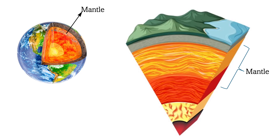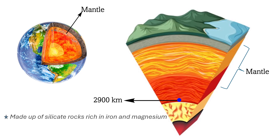Now, let's focus on the mantle. This layer lies beneath the crust, extending to about 2,900 kilometers deep. The mantle is predominantly made up of silicate rocks rich in iron and magnesium, and it behaves like a solid over long periods but can flow over geological timescales. This layer plays a crucial role in the movement of tectonic plates, which leads to continental drift, earthquakes, volcanic activity and the formation of mountains.